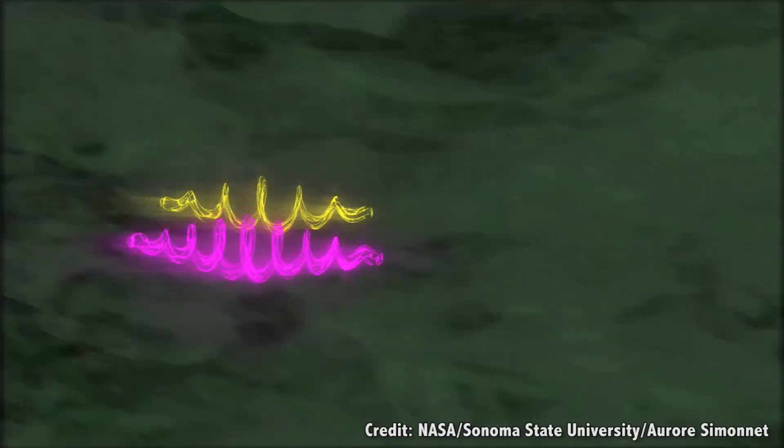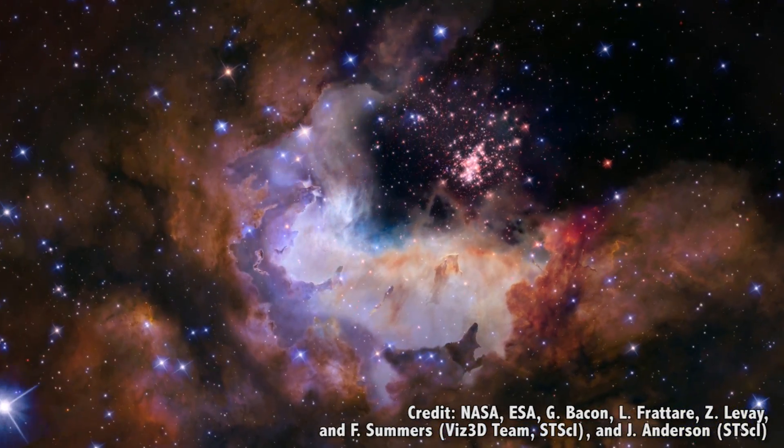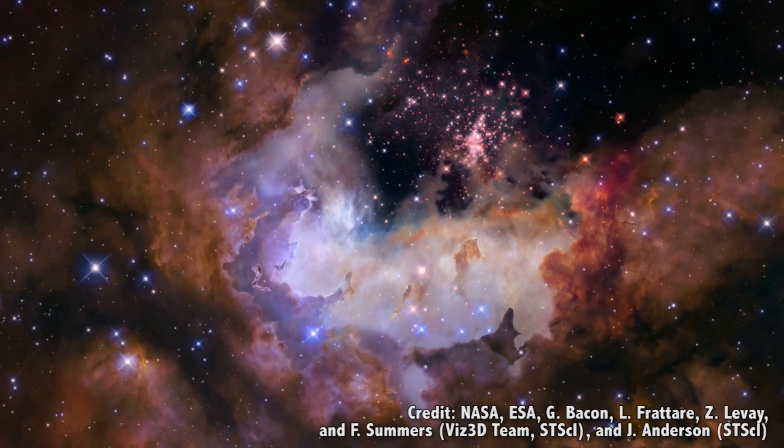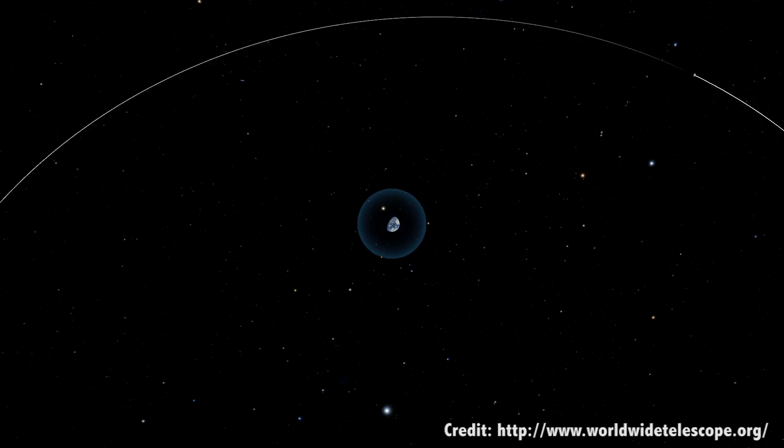We say that the Universe is flat, and this means that parallel lines will always remain parallel. 90 degree turns behave as true 90 degree turns, and everything makes sense. What are the implications for the entire Universe? What does this tell us?